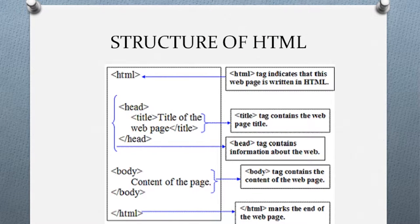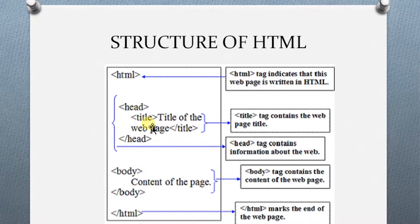This is the skeleton code for HTML. In the beginning we have an HTML tag, which indicates that the web page is written in HTML language. After this we have a head tag — the head tag contains the information about the web. Inside this head tag we have a title tag; as the name implies, the title tag contains the web page title. After all these tags we have a body tag, which contains the contents of the web page. And at the end, we have an HTML tag preceded by a slash symbol, which marks the end of the web page.